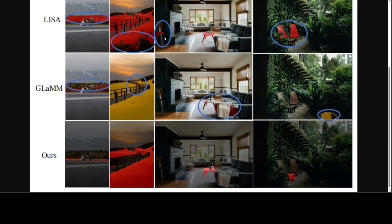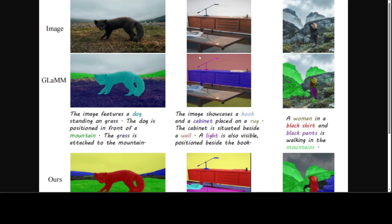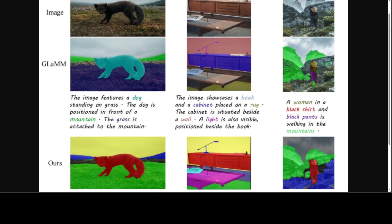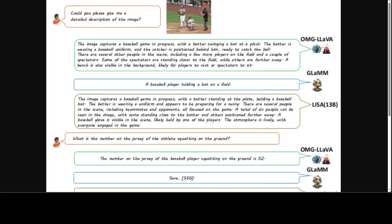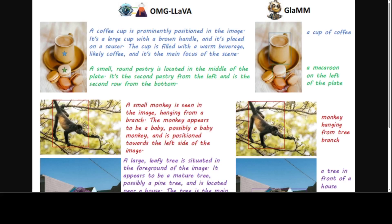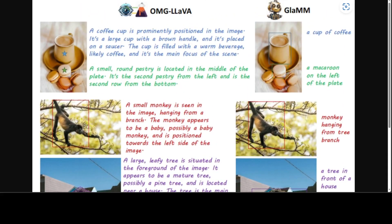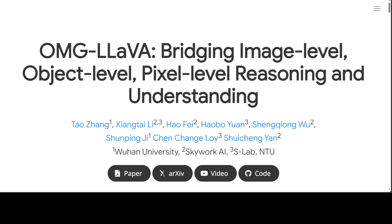Comparing OMG-LLaVA to LISA directly, the quality difference is clear. There are also comparisons across different grounded conversation generation tasks, where OMG-LLaVA and GLAM are compared. Similarly, the qualitative comparison on the visual prompt-based description task and the image-based conversation task comparison with GLAM and OMG-LLaVA all show strong results.